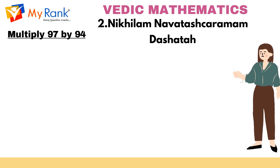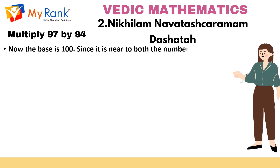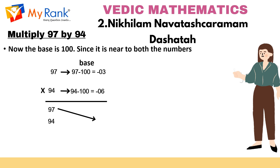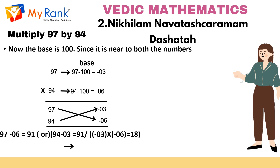Example 2: multiply the number 97 by 94. Here the base is 100 since it is near to both the numbers 97 and 94. So 97 minus 100 equals minus 3, and 94 minus 100 equals minus 6. Now the left hand side of the answer: we need to subtract the numbers crosswise, that is 97 minus 6 equals 91, and 94 minus 3 equals 91. Hence 91 is the left hand side of the answer. The right hand side: multiply vertically, minus 3 into minus 6 equals 18. The combined answer is 9118.